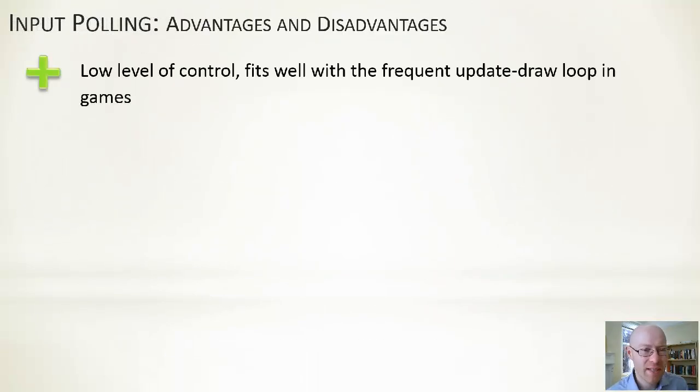Traditionally, most games have used input polling for a number of reasons. And it's what we're going to be assuming in this particular course. There are advantages and disadvantages. One advantage is with input polling, it is a low level of control. It fits in well with the update render loop because we're going to be updating the game frequently, say 30 times a second. So if we're using polling, we can check the state of the input 30 times a second. That works in well.